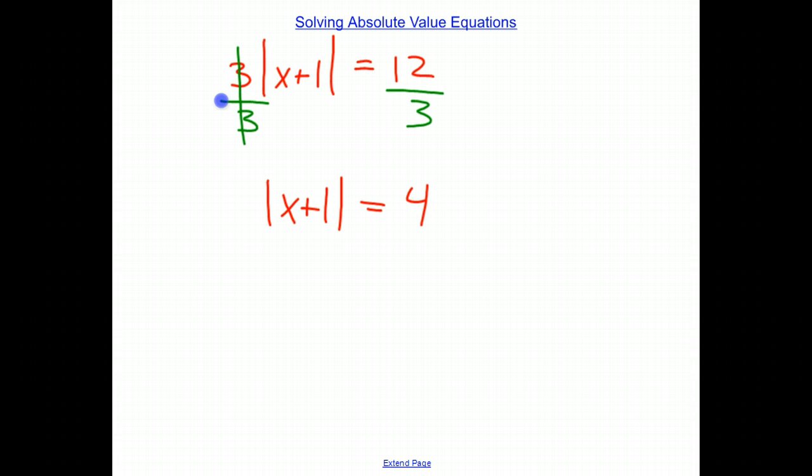Now all we need to do is separate the equation into two separate parts. We have x plus 1. Now we can get rid of the absolute values. Equals a positive 4. That would solve the equation. And the other way we can solve the equation is if x plus 1 is equal to negative 4.